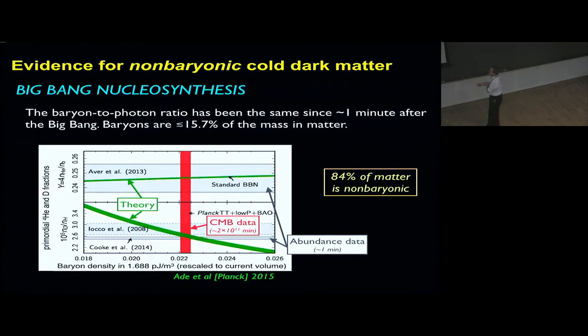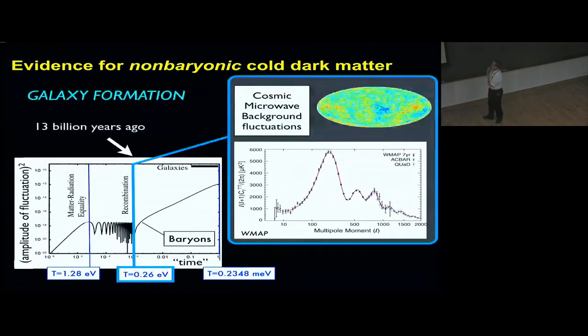Here we see the theory prediction for the ratio of abundances, deuterium to hydrogen and helium-4 to deuterium. We see predictions of theory in green and the CMB data one minute after the Big Bang in red and the stellar data in gray, and they all match. They point to 84% of the matter being non-baryonic.